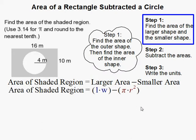Here's our general equation. The area of the shaded region equals length times width minus pi r squared. I used length times width because that is the equation for the rectangle, and pi r squared is the equation for a circle, which is our smaller area.